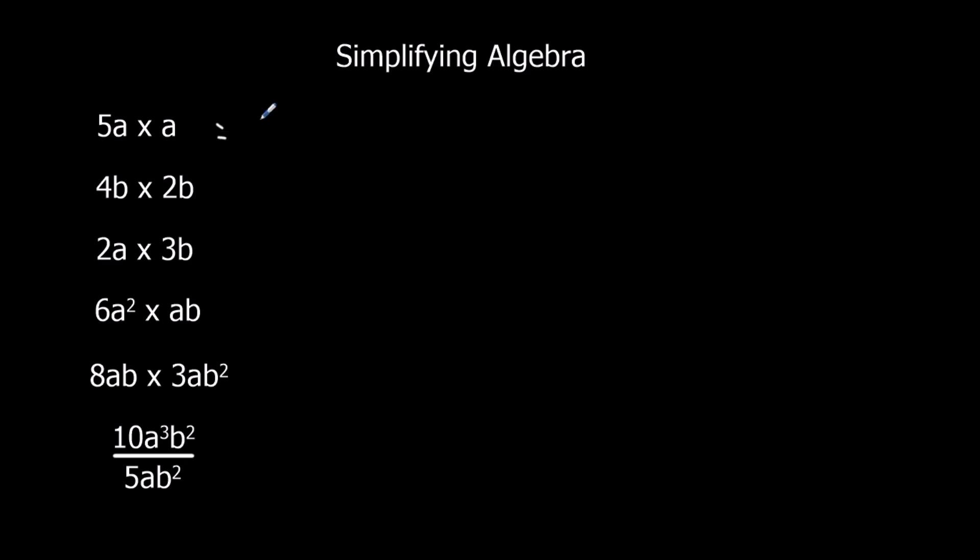5a times a, 5a squared. 4 times 2 is 8. b times b is b squared. 2 times 3 is 6. And then we've got a, b. Here we've got 6, a cubed, b.